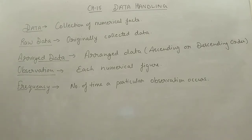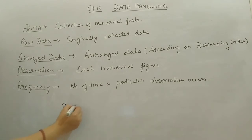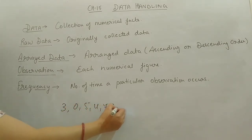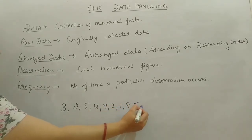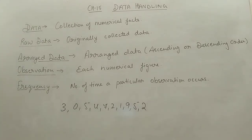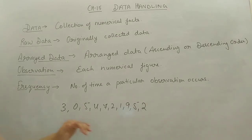Next thing is raw data. Raw data means originally collected data. Suppose in a class, 10 students' test marks are 3, 0, 5, 4, 7, 2, 1, 9, 5 and 2. These are the marks of 10 students. These are originally collected data, arranged roll number wise, and this we will call raw data.